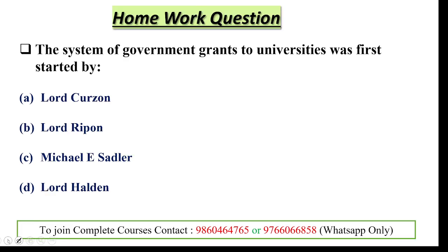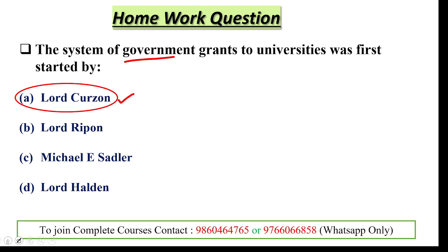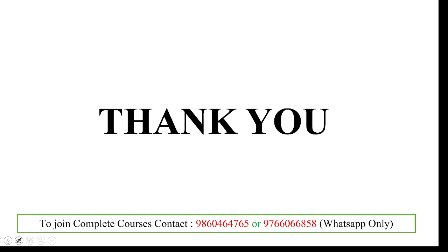Homework question: the system of government grants to universities was first started by whom? The answer is Lord Curzon, who gave the systematic government grants for universities. Today, government grants to universities are controlled and given by the UGC. That's all for today's session. We will meet with another important topic. Thank you, have a nice day.